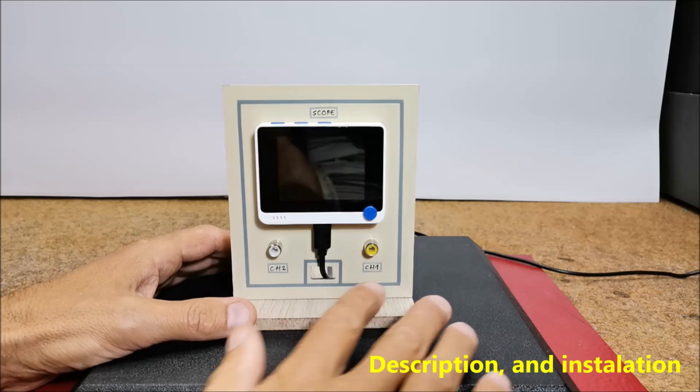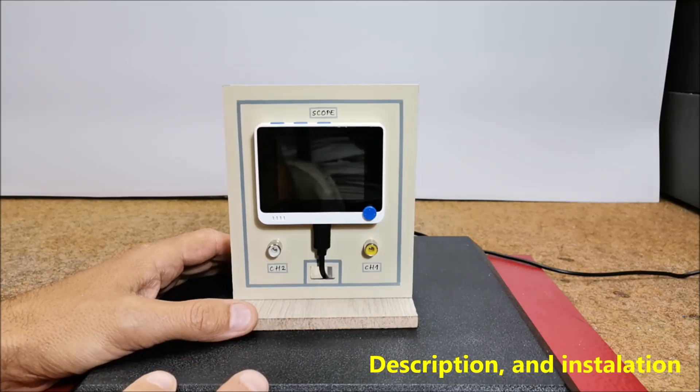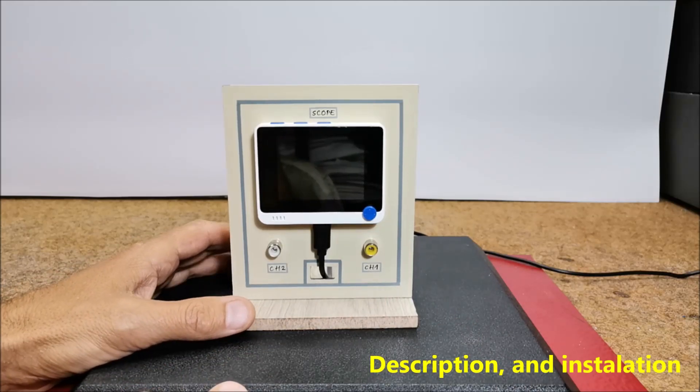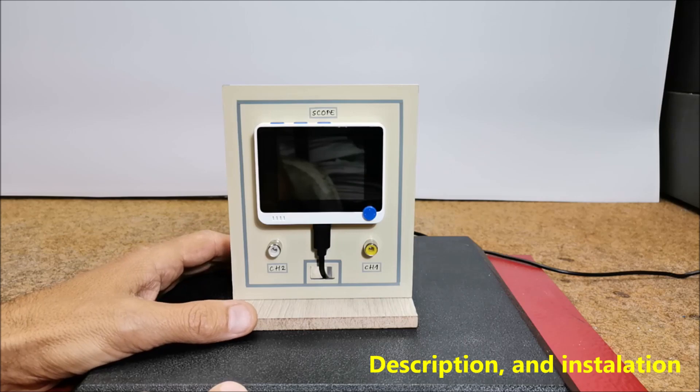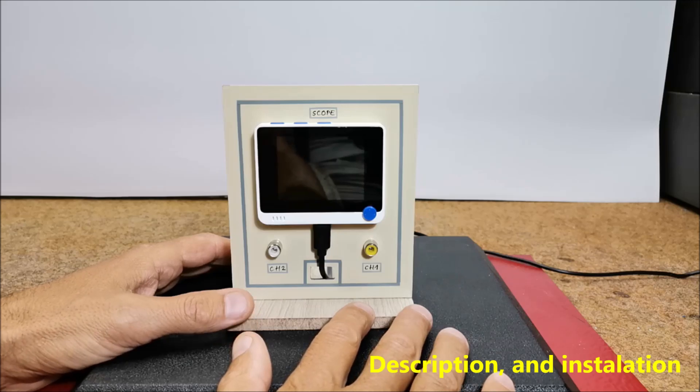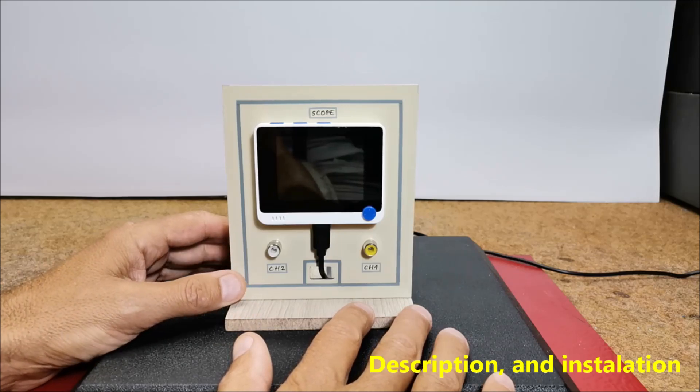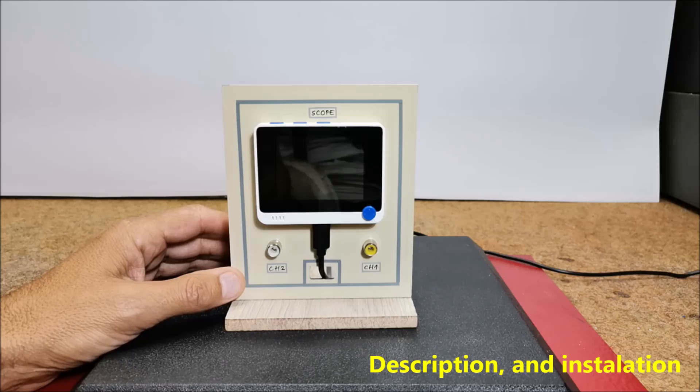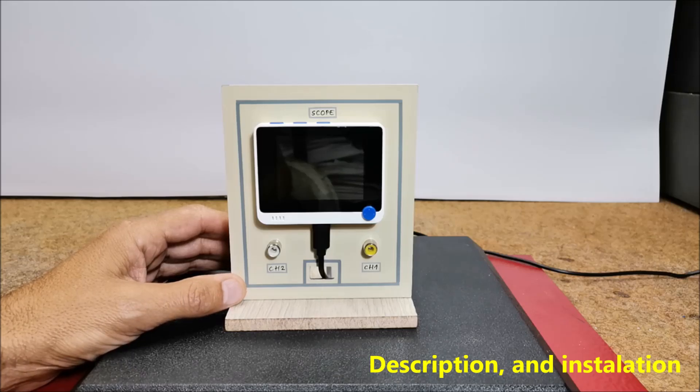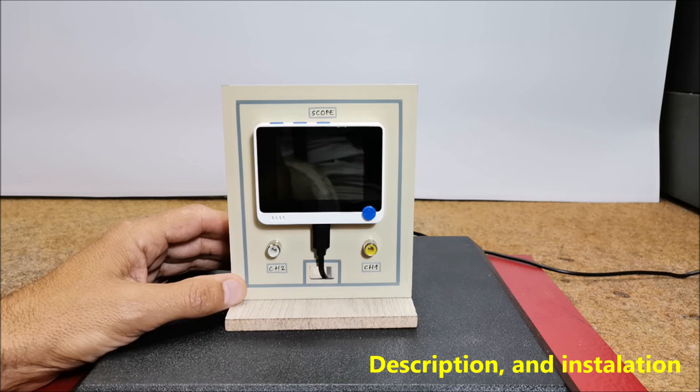This time I will describe a simple way to turn this device into a small two-channel oscilloscope. An oscilloscope is a highly useful electronic test instrument used for visualizing and analyzing electrical signals over time. It provides a graphical representation of electrical waveforms, making it a crucial tool for engineers,